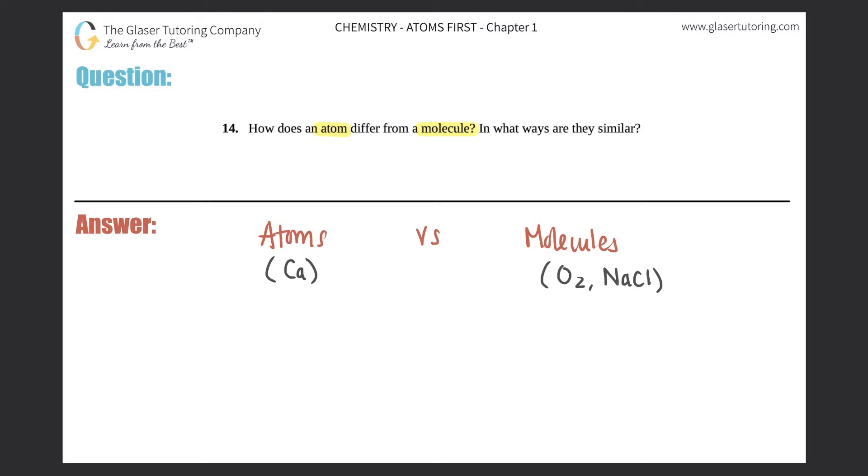So the similarities between atoms and molecules is that we cannot see these. Our eyes are not powerful enough. These are very, very small. Atoms and molecules are super small. We cannot see them ourselves. That's why we have such powerful microscopes to look at atoms and molecules.